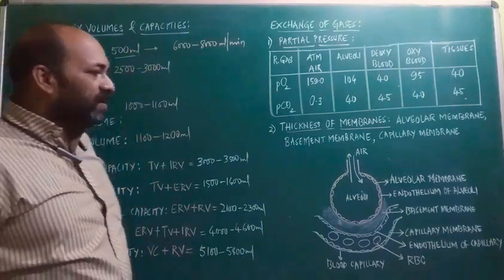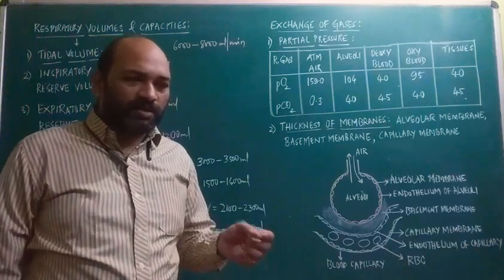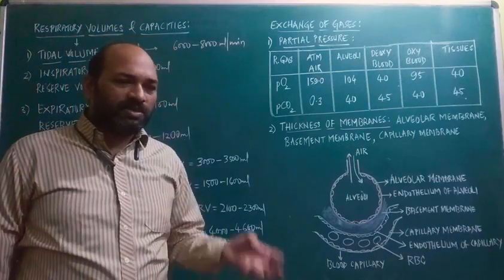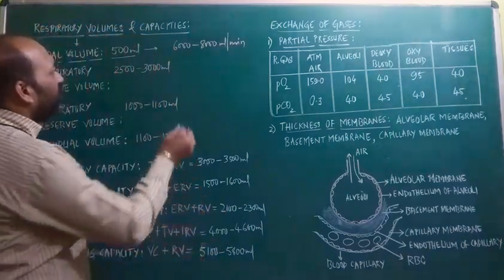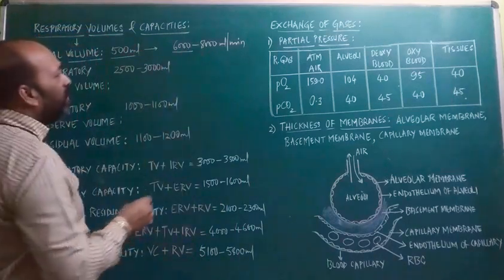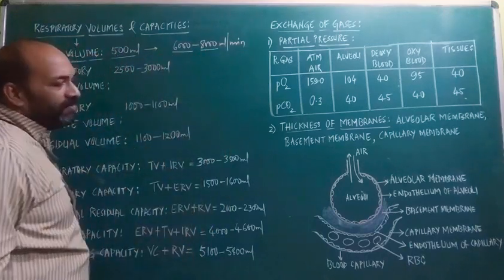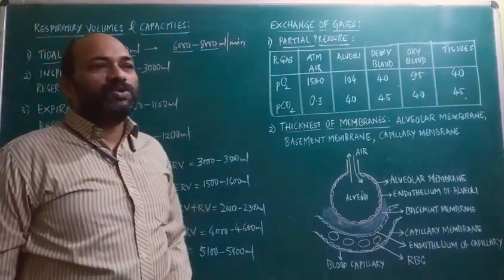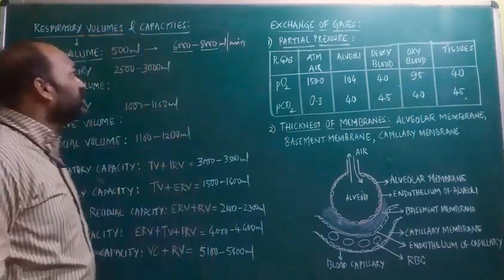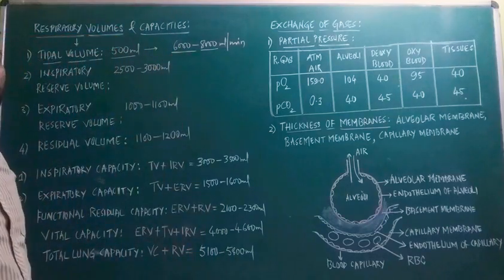A healthy individual at normal resting condition breathes around 12 to 16 times per minute. If we calculate: 12 × 500 ml gives around 6,000 ml, and 16 × 500 ml gives around 8,000 ml. So a healthy individual's tidal volume will be around 6,000 to 8,000 ml per minute.